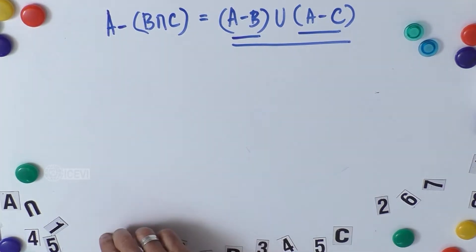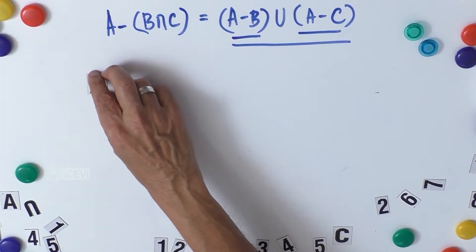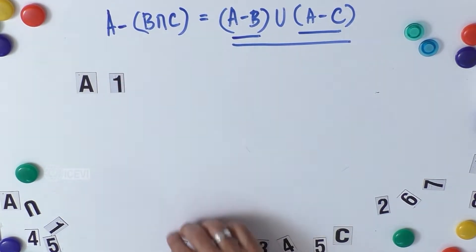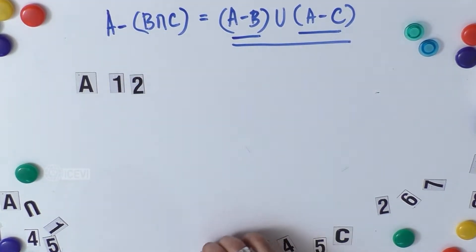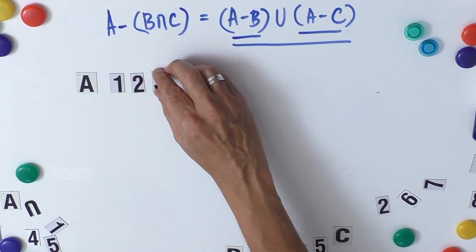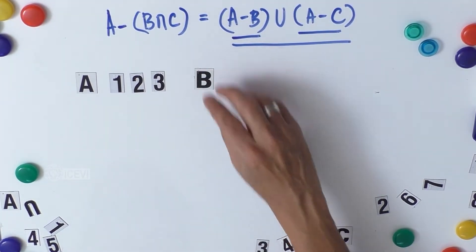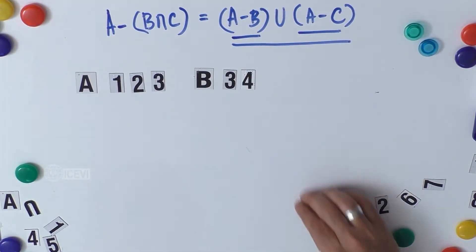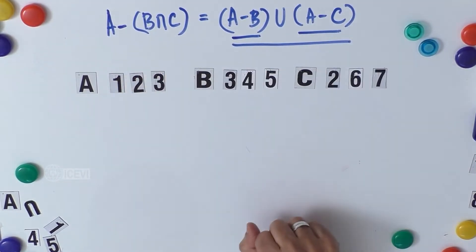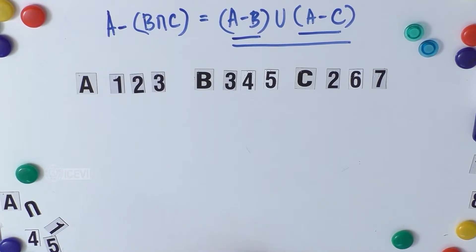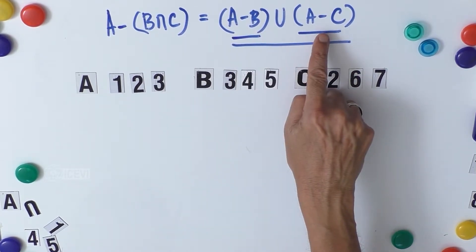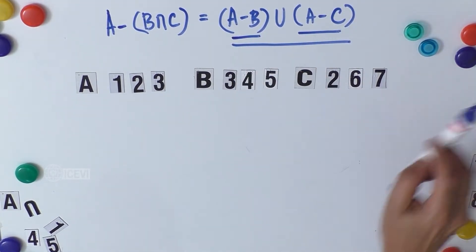To prove this equation we need three sets. Let us take set A with three elements: 1, 2, and 3. Set B with three elements: 3, 4, and 5. Set C with three elements: 2, 6, and 7. We have to prove that A minus B union A minus C holds.